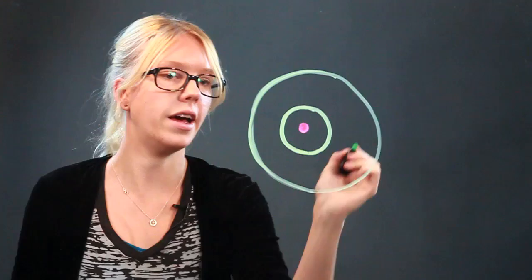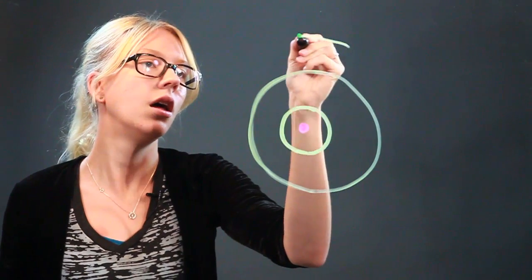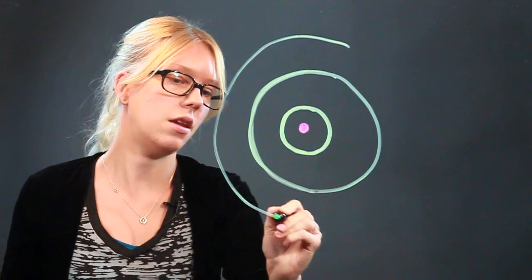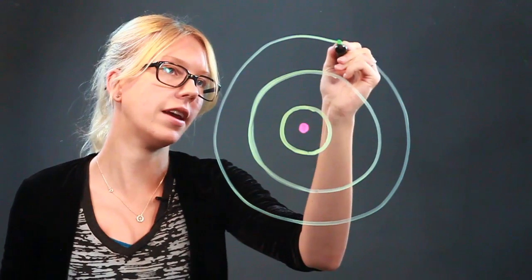And then another outline of a circle. And then a third outline of a circle. So it kind of looks like a target.